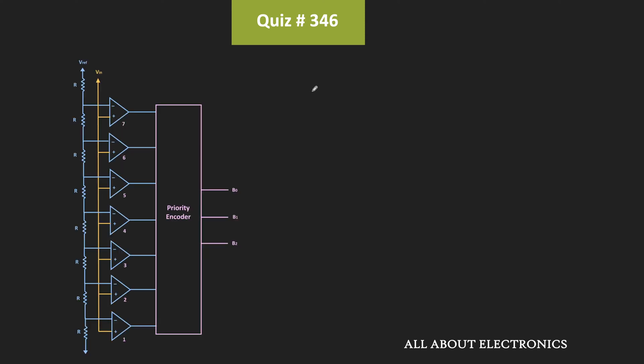So as you know, for an n-bit flash type ADC, we require total 2^N resistors and 2^N-1 comparators. So as you can see over here, for this 3-bit flash type ADC, there are total 8 resistors and 7 comparators.